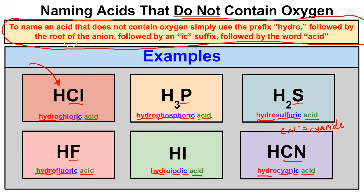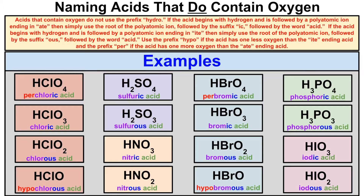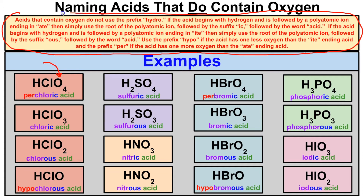What if you have an inorganic acid that does in fact have oxygen in it? There's a different set of rules we're going to learn about next. Every one of these examples starts with hydrogen — so they are acids — but they all have oxygen in them. The rules for naming oxygen-containing inorganic acids are a little different and lengthy; feel free to pause and take a look at the rules.